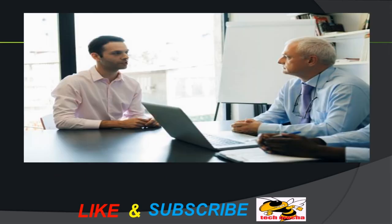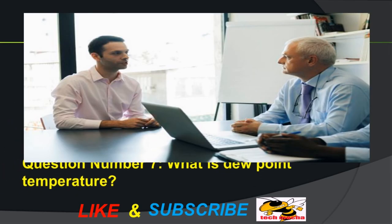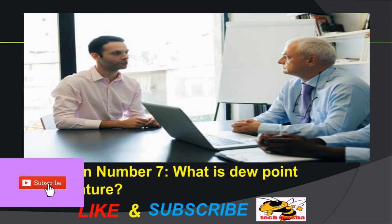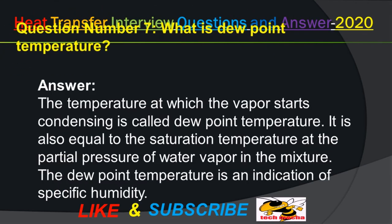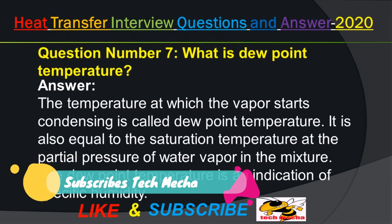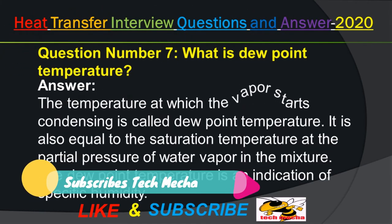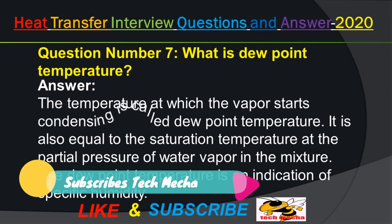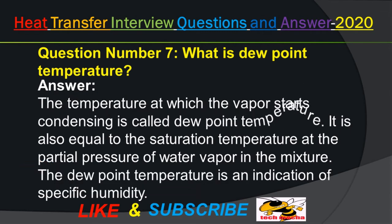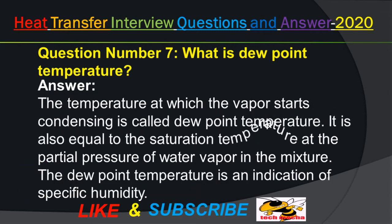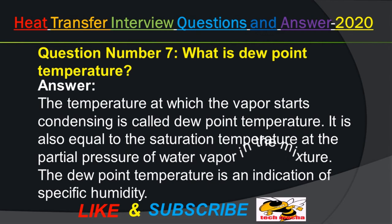Question number 7: What is dew point temperature? Answer: The temperature at which the vapor starts condensing is called dew point temperature. It is also equal to the saturation temperature at the partial pressure of water vapor in the mixture.